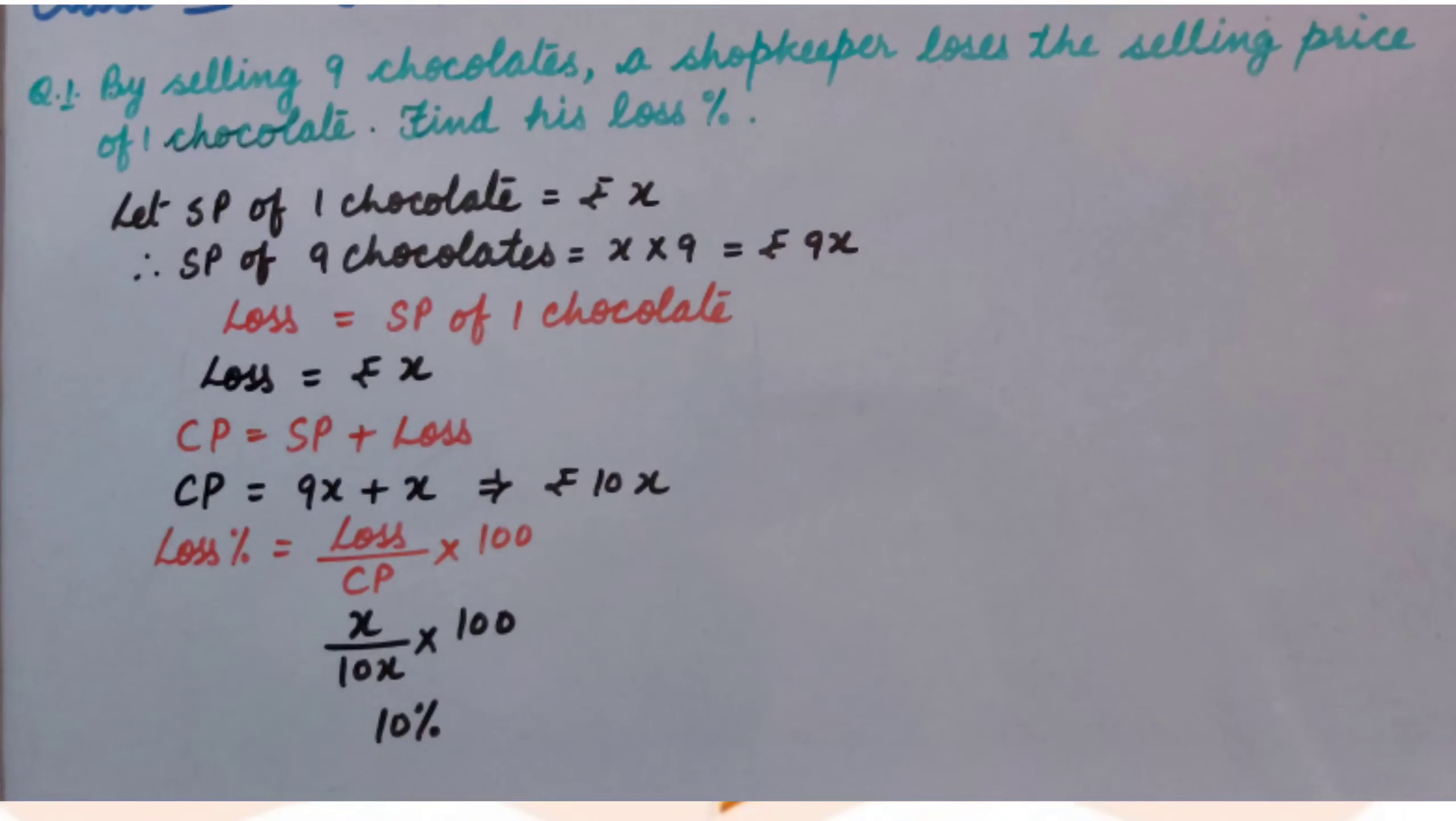And because loss is equal to SP of 1 chocolate, so loss is Rs. X. Now we know SP of 9 chocolates and loss. So we can find CP, that is SP plus loss. So CP is Rs. 10X.